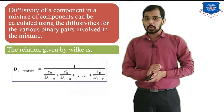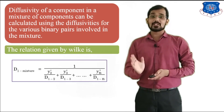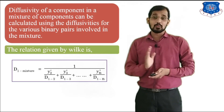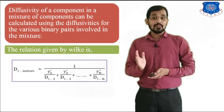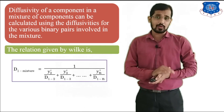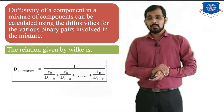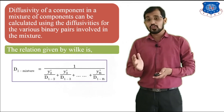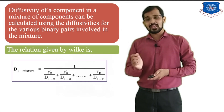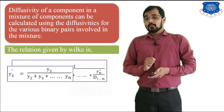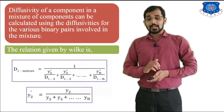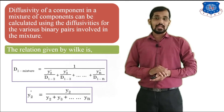D12 means diffusion of component 1 with respect to component 2. D13 means diffusion of component 1 with respect to 3, and similarly D1n is diffusion of component 1 with respect to the nth component. To calculate Y2' and Y3', the equation is: Y2' equals Y2 divided by (Y2 + Y3 + ... + Yn).